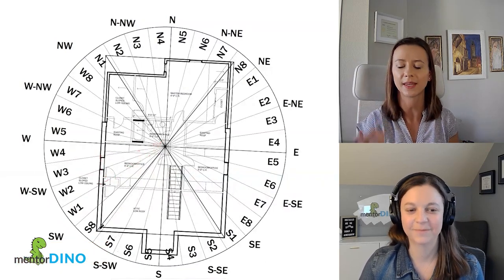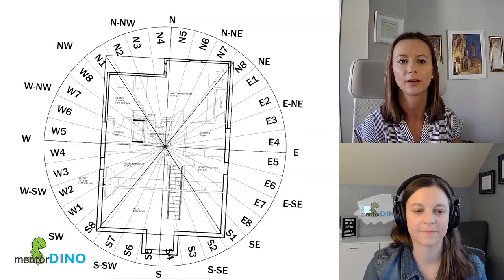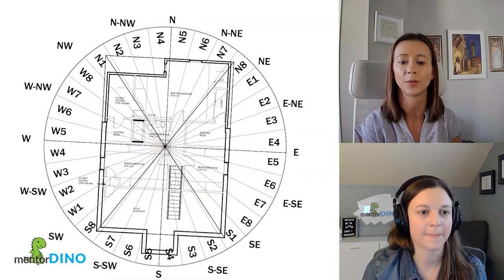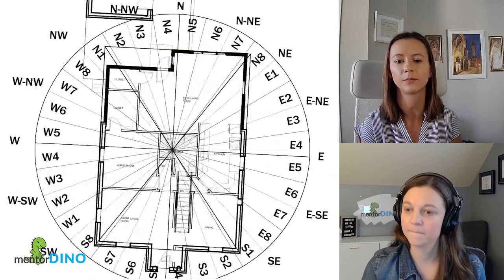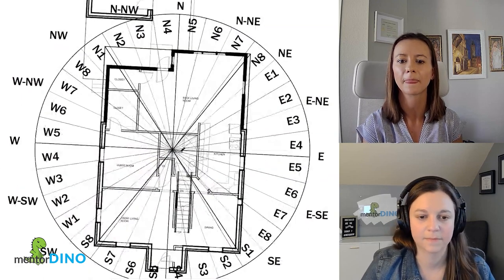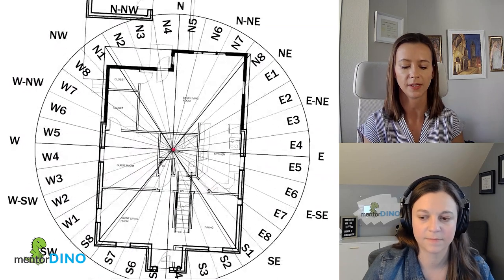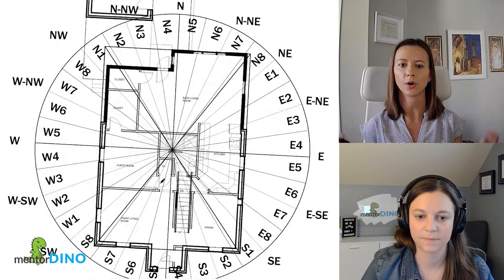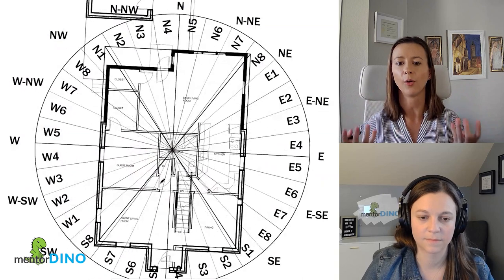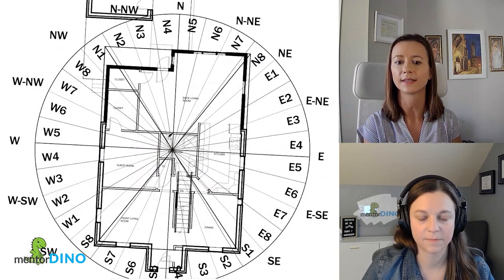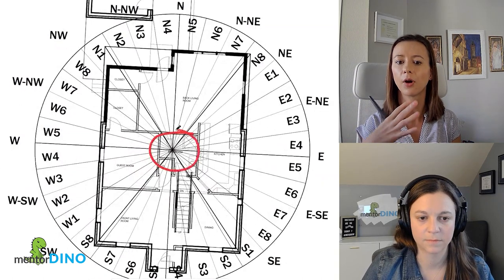But so those are some things. One thing I did want to cover that I kind of saw was a little bit of an issue - and I have this in my apartment - is the center point, which is very important in Vastu because it's called the Bramhasthan. It's the center, where all the energies emerge in the home. And you want this space to be as clear as possible.